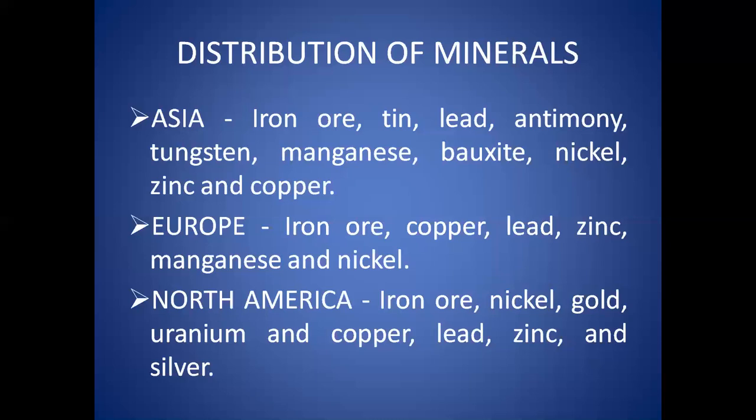The mineral deposits in North America are located in three zones: the Canadian region north of the Great Lakes, the Appalachian region, and the mountain ranges of the West. Iron ore, nickel, gold, uranium and copper are mined in the Canadian Shield region. Coal is found in the Appalachian region, and the Western Cordilleras have vast deposits of copper, lead, zinc, gold and silver.